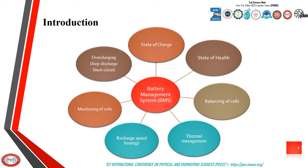To optimize the use of the battery, a battery management system (BMS) in the vehicle is essential to know in real time the state of the battery, such as the state of charge, the state of health, measure the voltage of each cell, measure the current and temperature of the battery, balancing of cells, monitoring of cells, thermal management, and protect the battery from overcharging and deep discharge and recharge speed strategy.